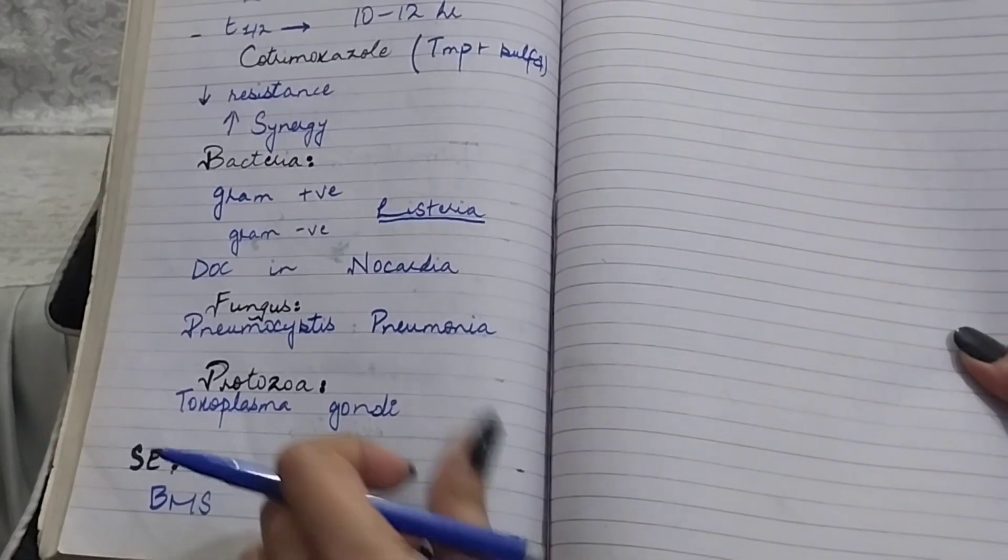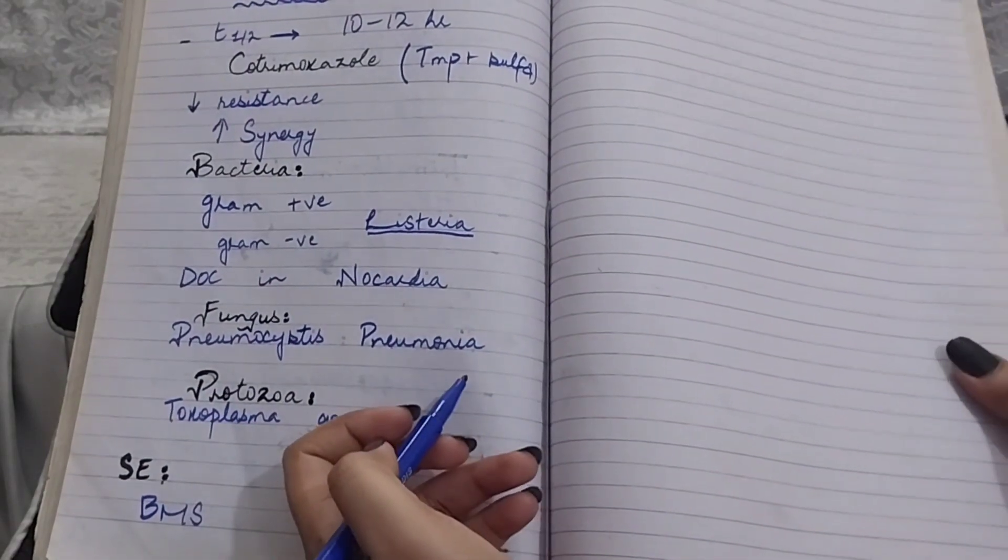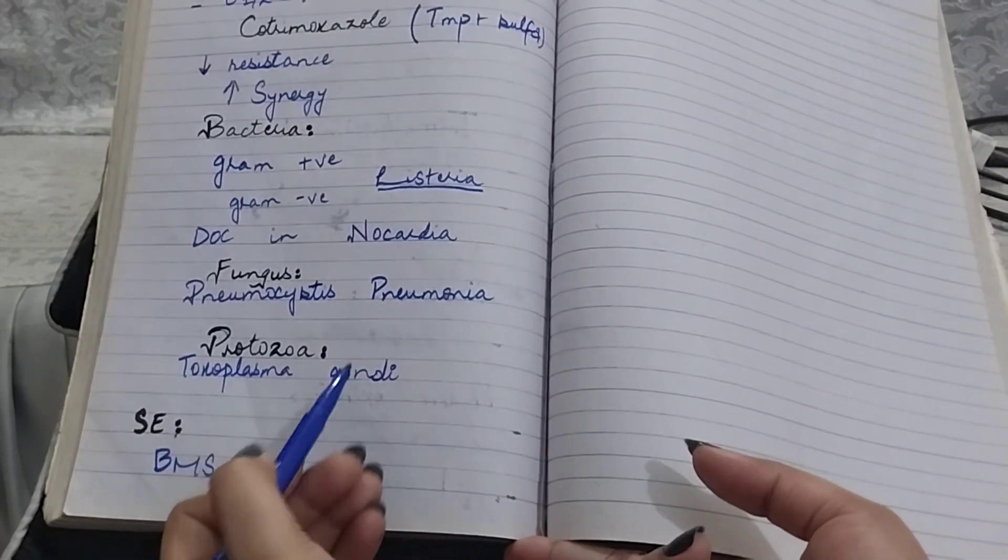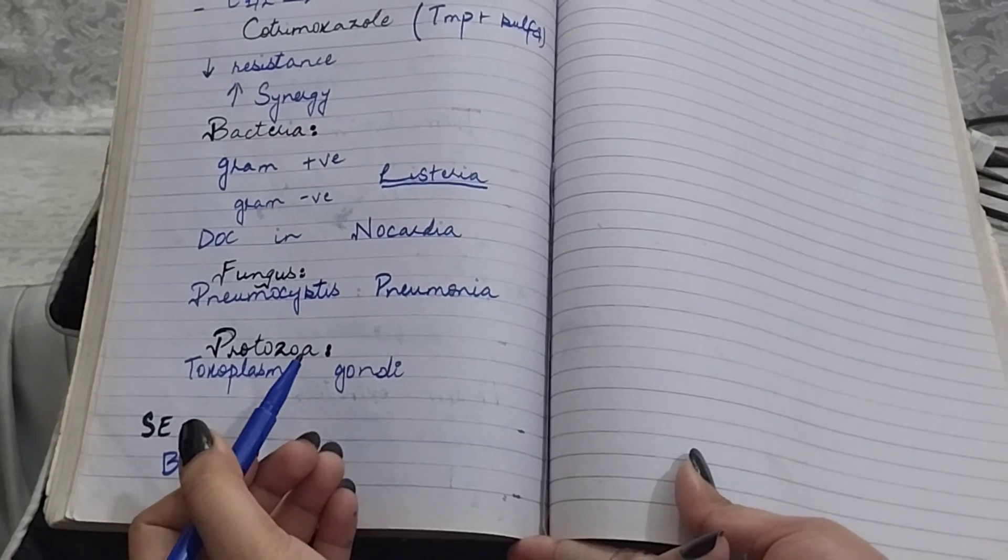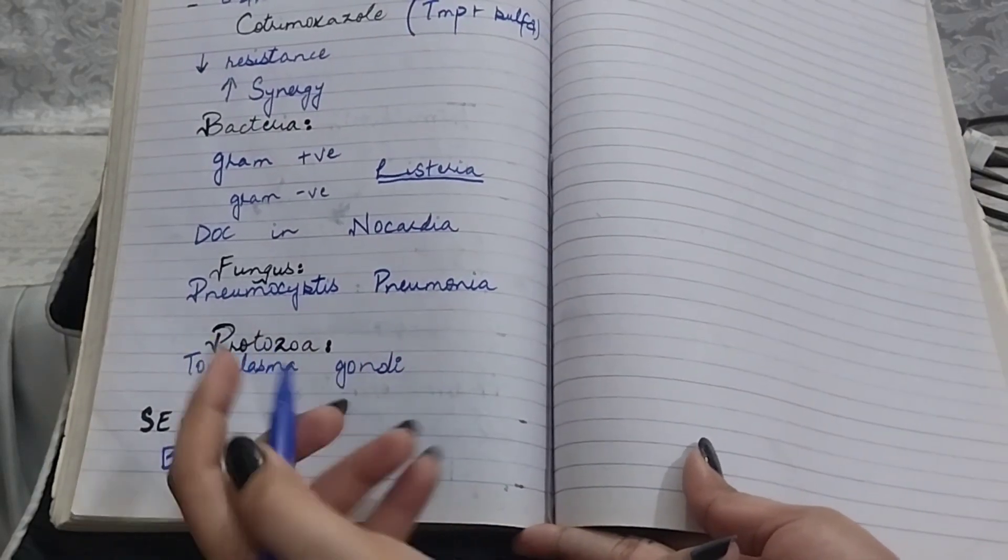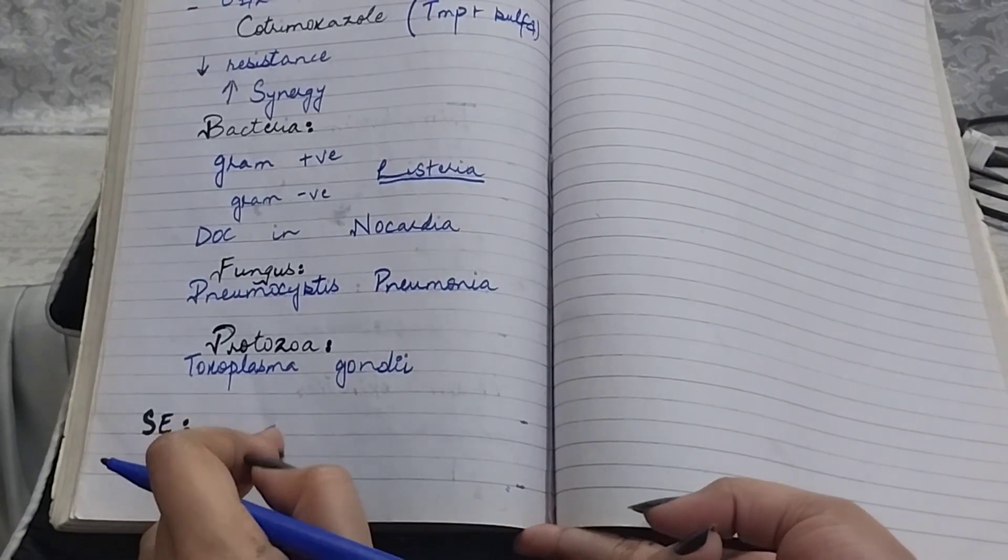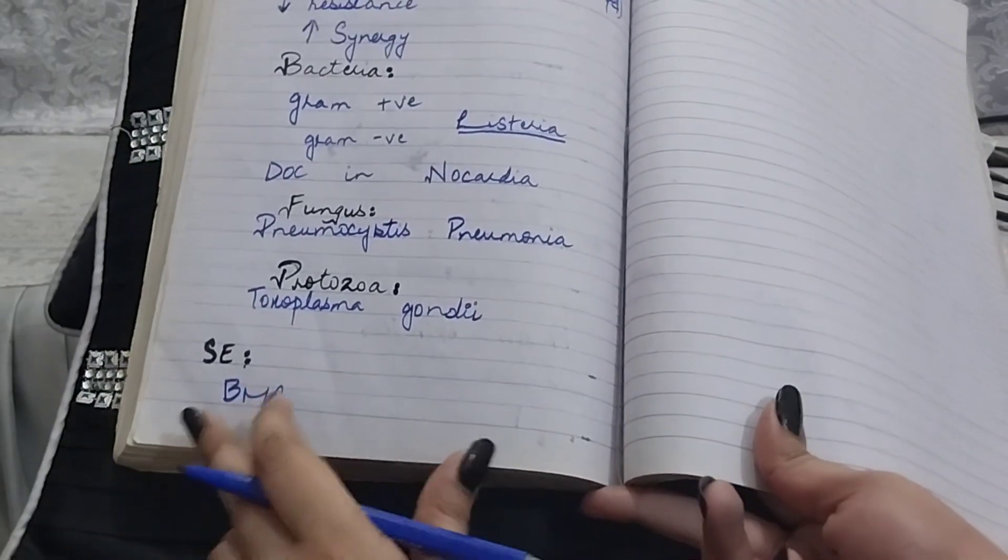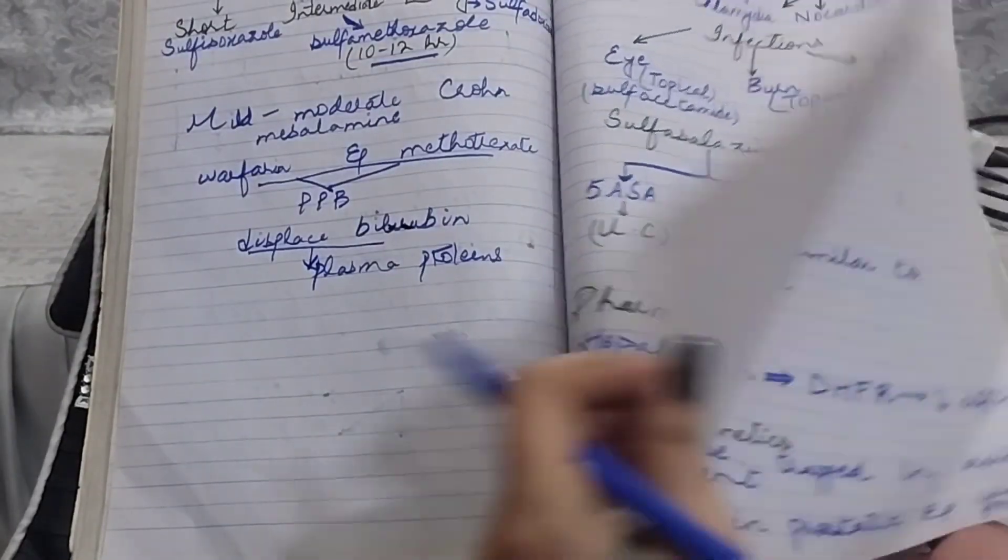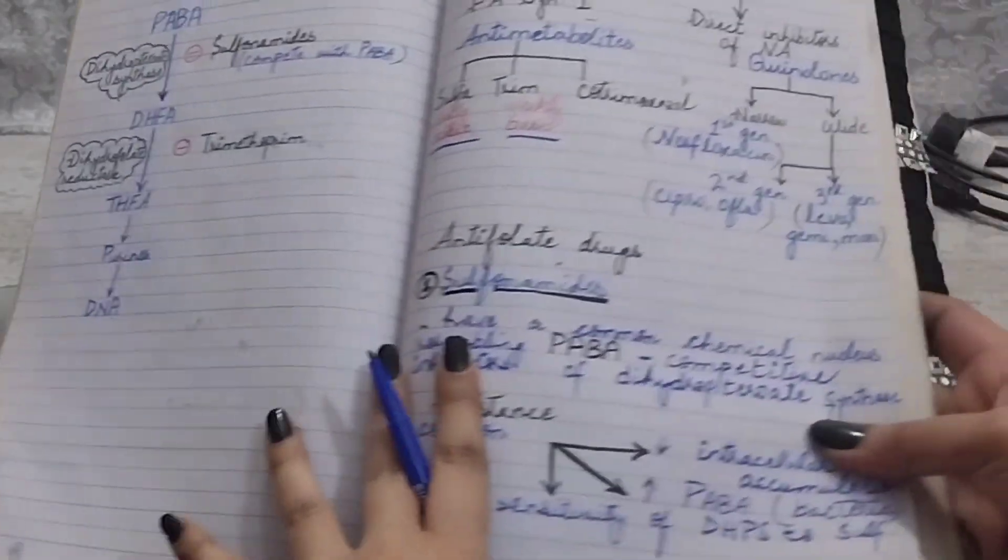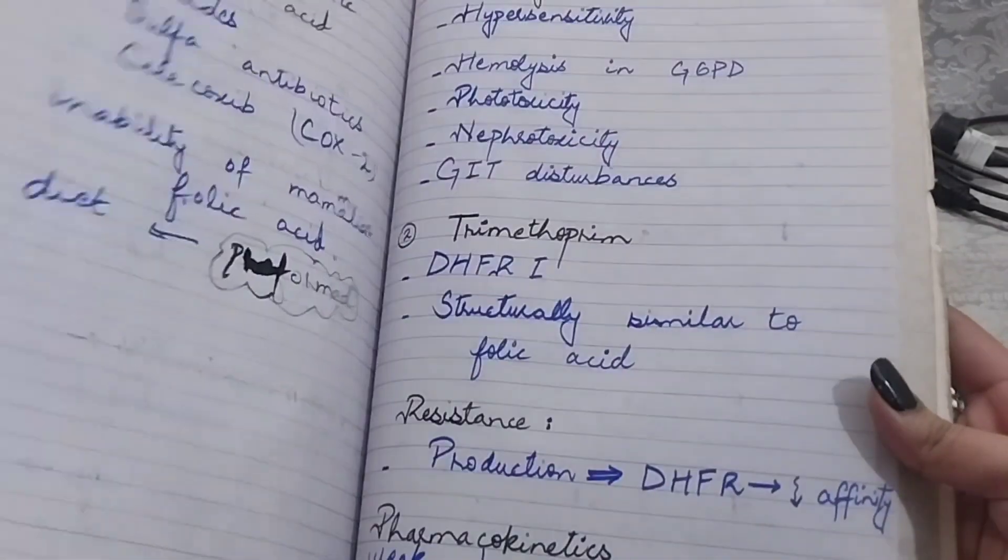In fungus, cotrimoxazole is used to treat Pneumocystis pneumonia. In protozoa, cotrimoxazole is used to treat infections that are caused by Toxoplasma gondii. Side effect of trimethoprim or pyrimethamine is bone marrow suppression. In the next video, we will talk about direct inhibitors of nucleic acid, quinolones. Thank you, Allah hafiz.